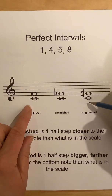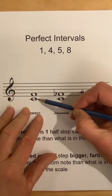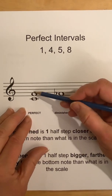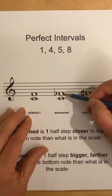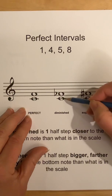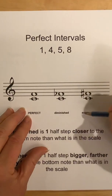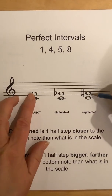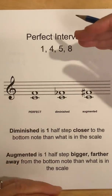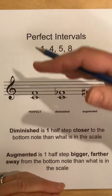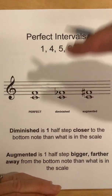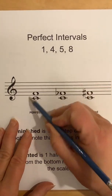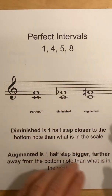I'll use a fourth with C as the bottom note. Our perfect fourth is C to an F — F-natural is in C major, so that's a perfect fourth. Once you put a flat there, it's diminished. They go perfect, diminished, and then augmented — three different types only. So an F-flat gives diminished, and C to an F-sharp is half a step larger, giving augmented. Diminished is half a step closer or smaller than what's in the scale; augmented is half a step bigger. For firsts, fourths, fifths, or eighths, there are three different possibilities.